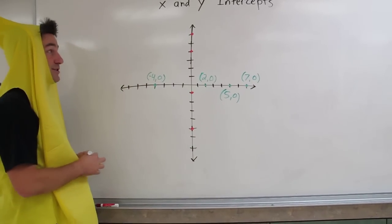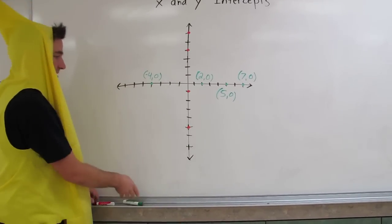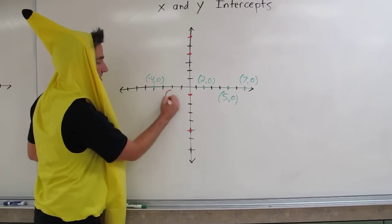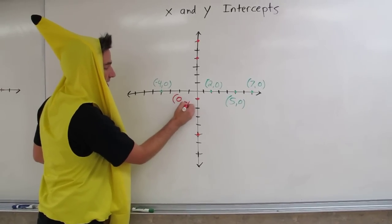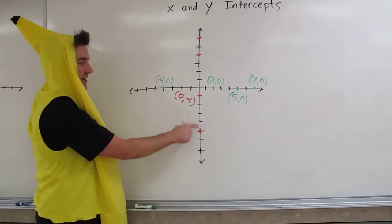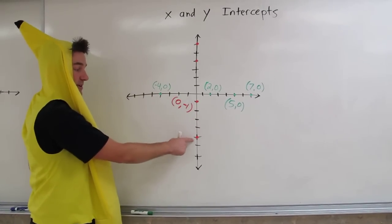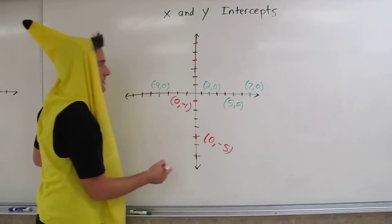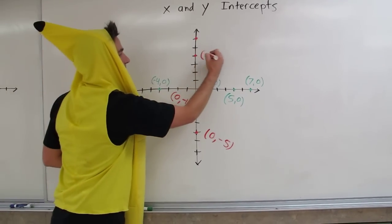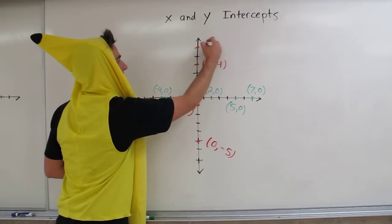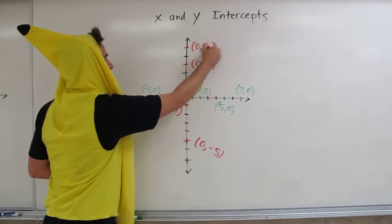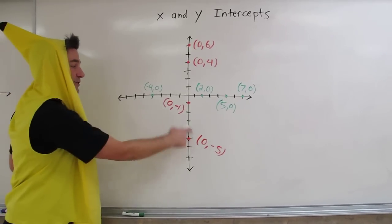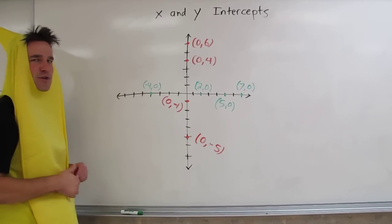Now let's look at the y-intercepts — these red dots. This one right here has the coordinates 0, negative 1. This one down here is 0, negative 5. Up here, 0, 4, and 0, 6. You may notice all the y-intercepts have 0 as their x-coordinate.